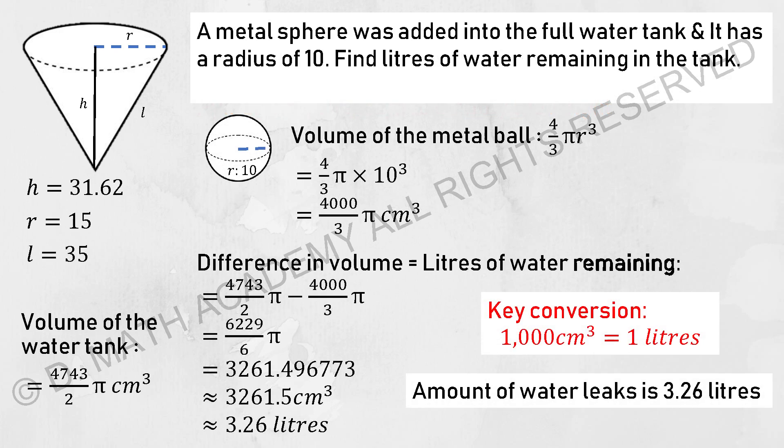A metal sphere was then added into the full water tank and it has a radius of 10. Find out the liters of water that leaked out from the tank itself.